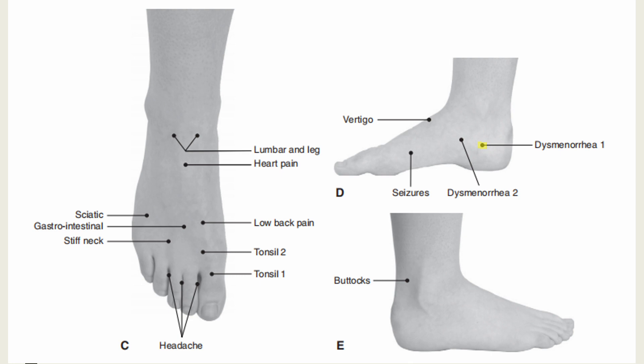Dysmenorrhea 1 point is located 2 units directly below the medial malleolus. Indications include uterine bleeding, irregular menses, and dysmenorrhea. Dysmenorrhea 2 point is located in the depression posterior and inferior to the tubercle of the navicular bone. Indications include dysmenorrhea, uterine bleeding, and ovarian cysts.